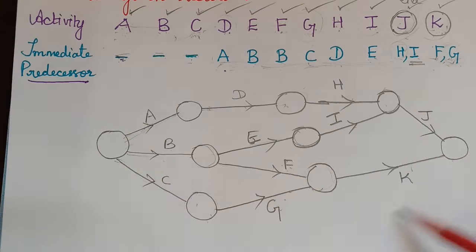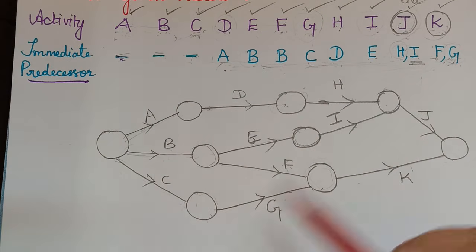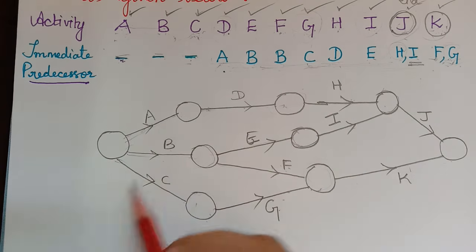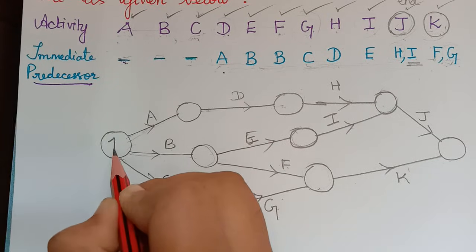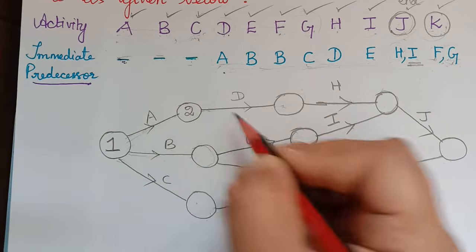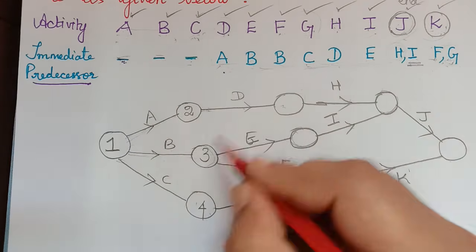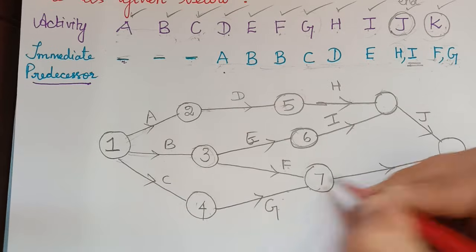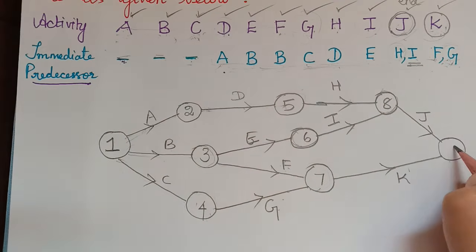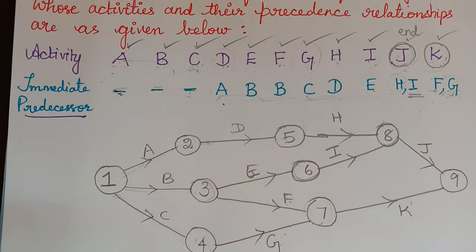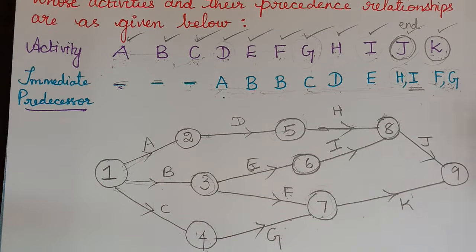Now we have to number the diagram according to the order in which the events are preceded. Event 1 is the starting node, then event 2, event 3, event 4, event 5, event 6, event 7, event 8, and event 9. There are 9 events in total, and this is the complete network diagram for the given activities with their immediate predecessors.